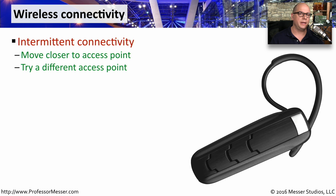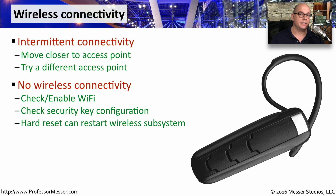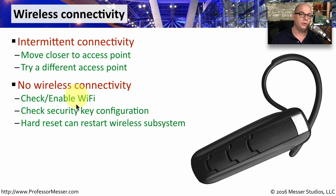Our mobile devices don't connect to a physical wired network, so we rely on wireless connectivity to connect all of our devices together. If we're having intermittent connectivity, we may want to try moving closer to our wireless access point, or try a different access point to get a stronger signal. If there's no wireless access at all, make sure Wi-Fi is enabled on the device, and check that the security key configured on the access point matches the one on the wireless device. Sometimes a hard reset can restart the wireless configuration and get the 802.11 wireless network running again.